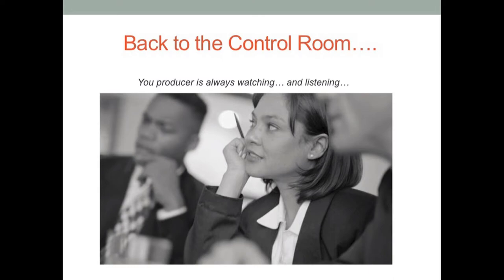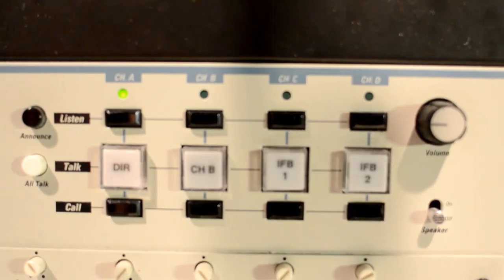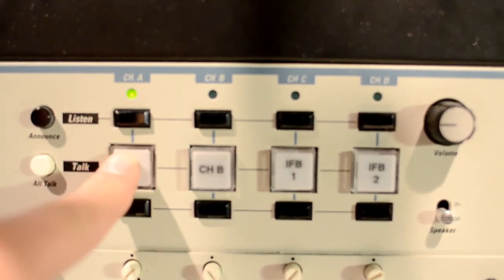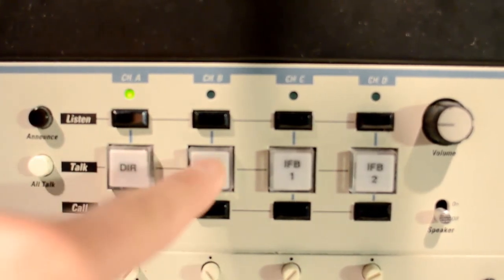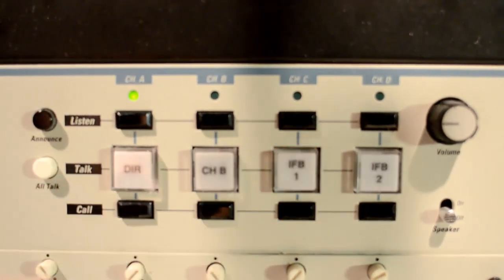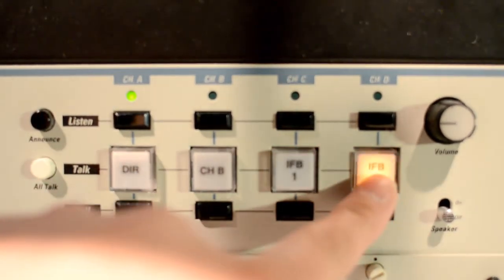Let's head back to the control room. These four buttons are the ones you want to communicate with the set. When you press them, they will light up. This means your channel is open for chatting. You don't want to hold the button the whole time because it will distract your anchors.